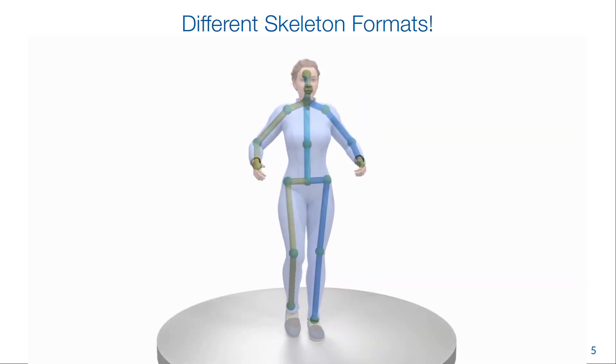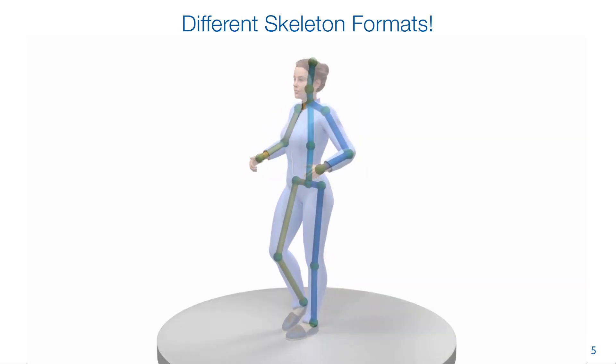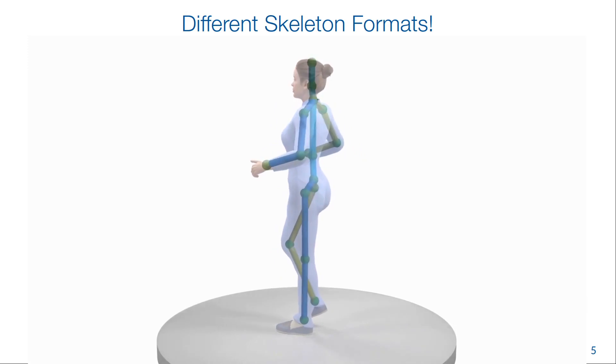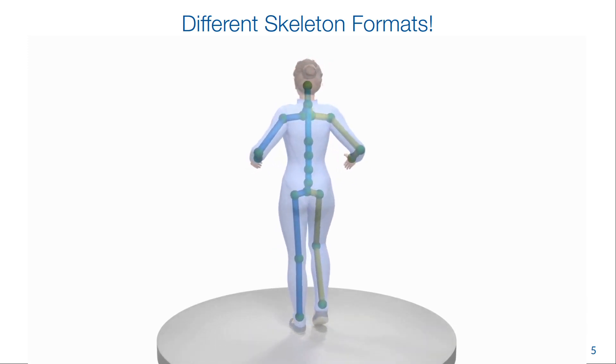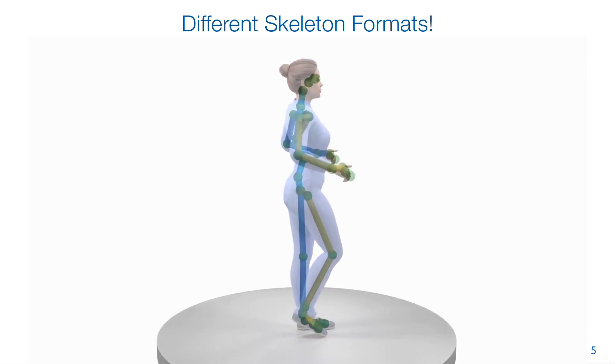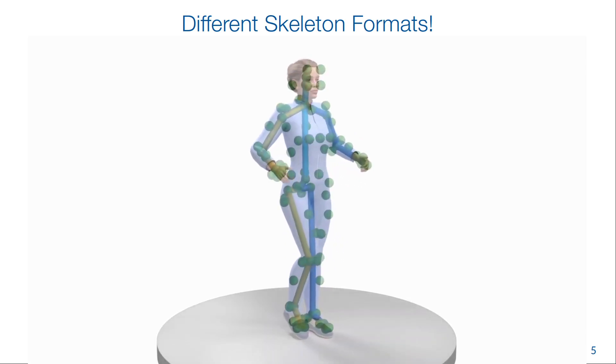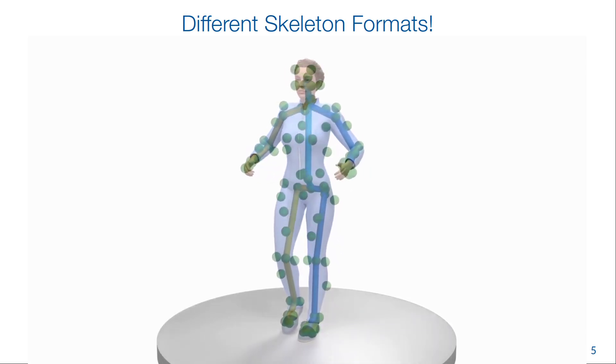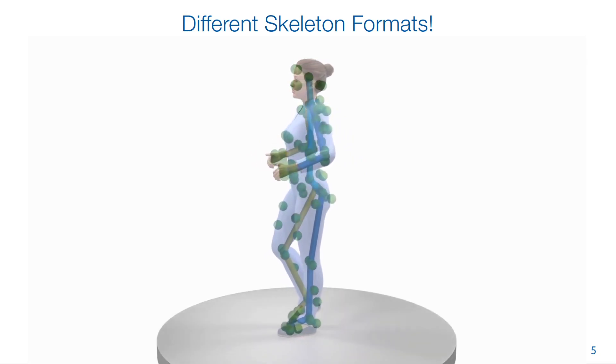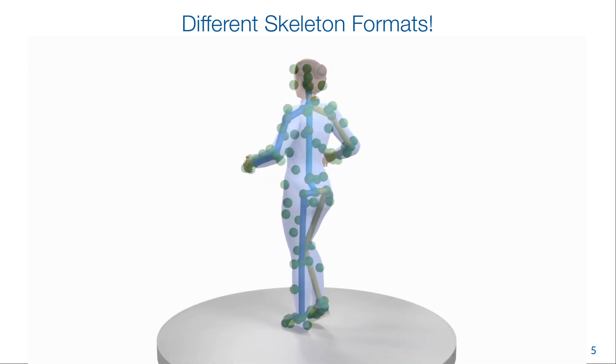But here's the catch. These datasets use a variety of different skeleton format definitions, for example because they were recorded with different mocap systems. Both the number and the placement of the key points can be different. Some have surface markers, some have joints inside the body. So how can we train one model with all these different labels?